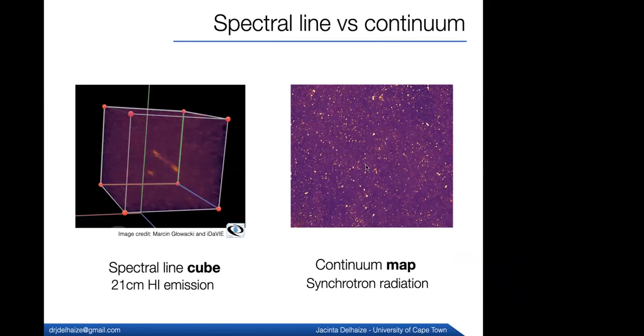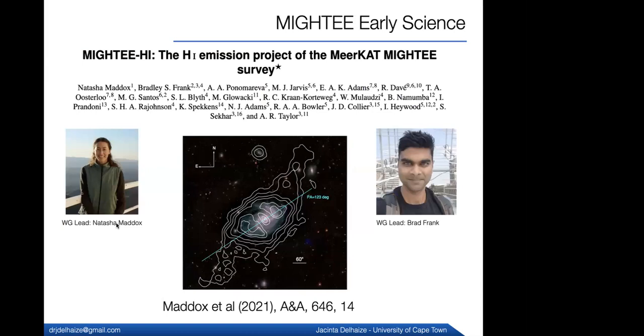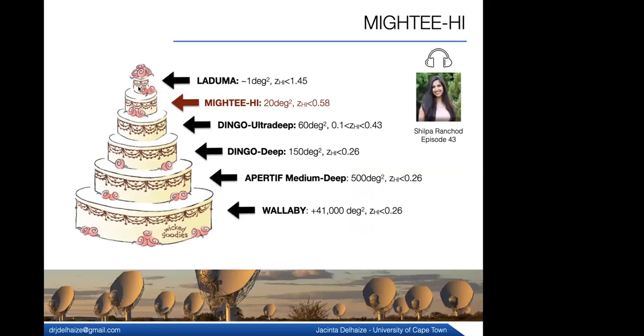Okay, so MIGHTEE has both an H1 component and a continuum component, as I've said. So first the H1 component, the working group leads are Natasha Maddox and also Brad Frank, who's here at UCT. And there's an initial paper out by Natasha describing the MIGHTEE-A1 early science data. So if you think of the wedding cake approach that we were talking about before, MIGHTEE is what we might call a medium deep survey. So it covers 20 times the field of view of LADUMA, but not out to as high redshift and not as high sensitivity. So maxing out at about redshifts of 0.58.